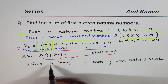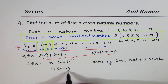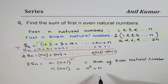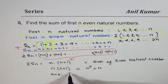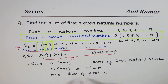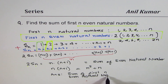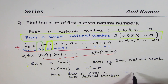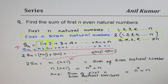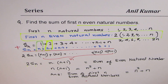So the formula is n·(n+1), which can be written as n² + n. The sum of first n even natural numbers is equal to n² + n. That is how you derive this formula. It's a very important formula. Feel free to post comments and share my videos. Thank you and all the best.